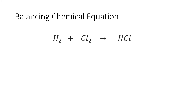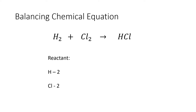Let us now balance the chemical equation between hydrogen and chlorine. In the reactant side there are 2 hydrogen and 2 chlorine, while on the product side there is only 1 hydrogen and 1 chlorine. To balance this, we put a coefficient of 2 beside HCl, so there will be 2 hydrogen and 2 chlorine on the product side.